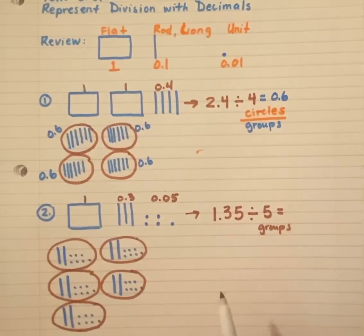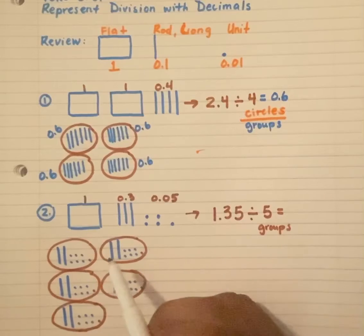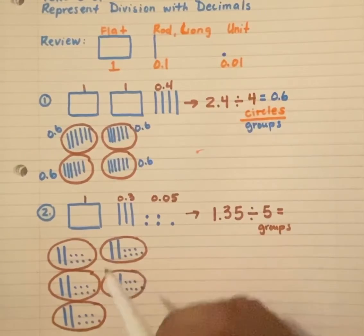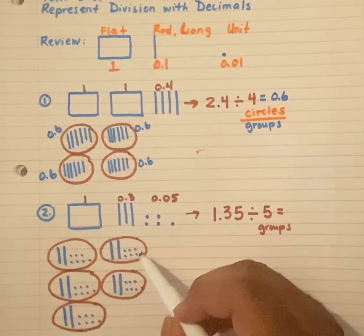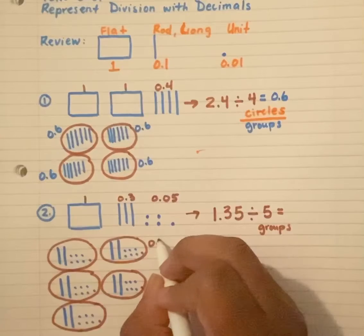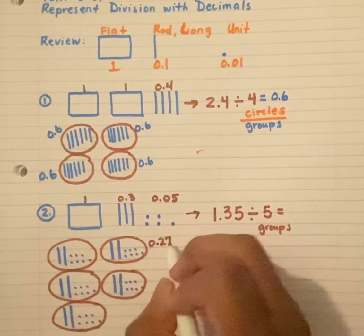Now, how much is in each group? Let's just count. One, two. That's twenty cents. Twenty-one, two, three, four, five, six, seven. Zero and twenty-seven hundredths.